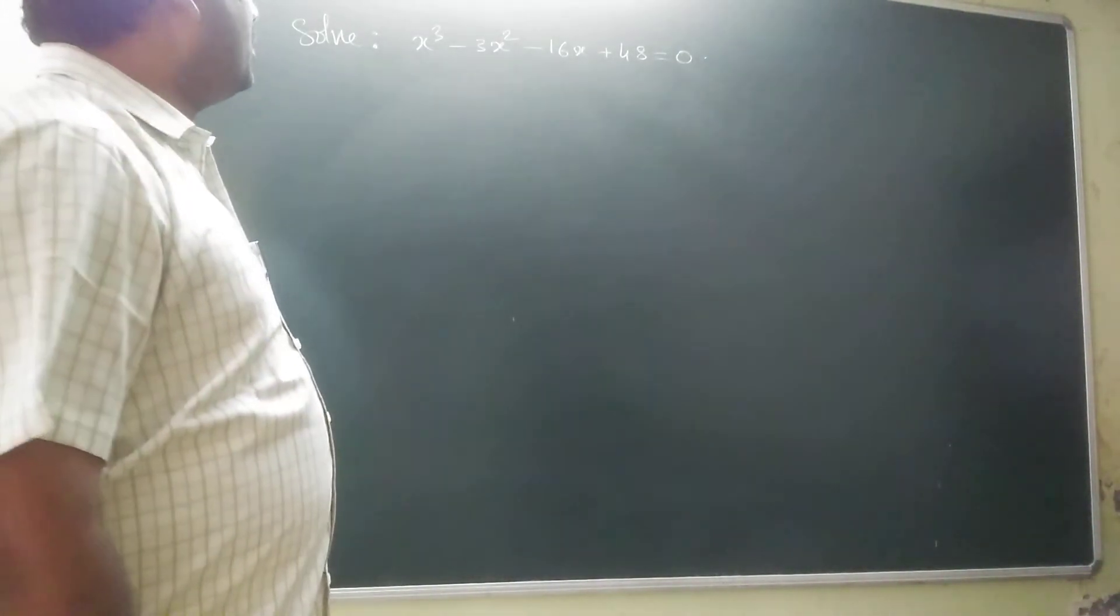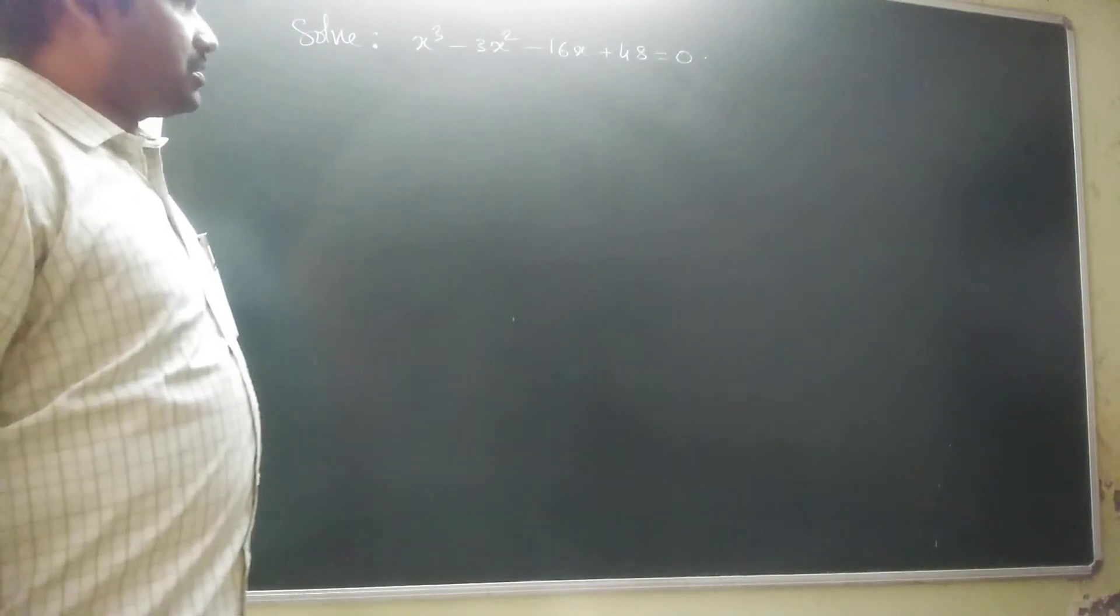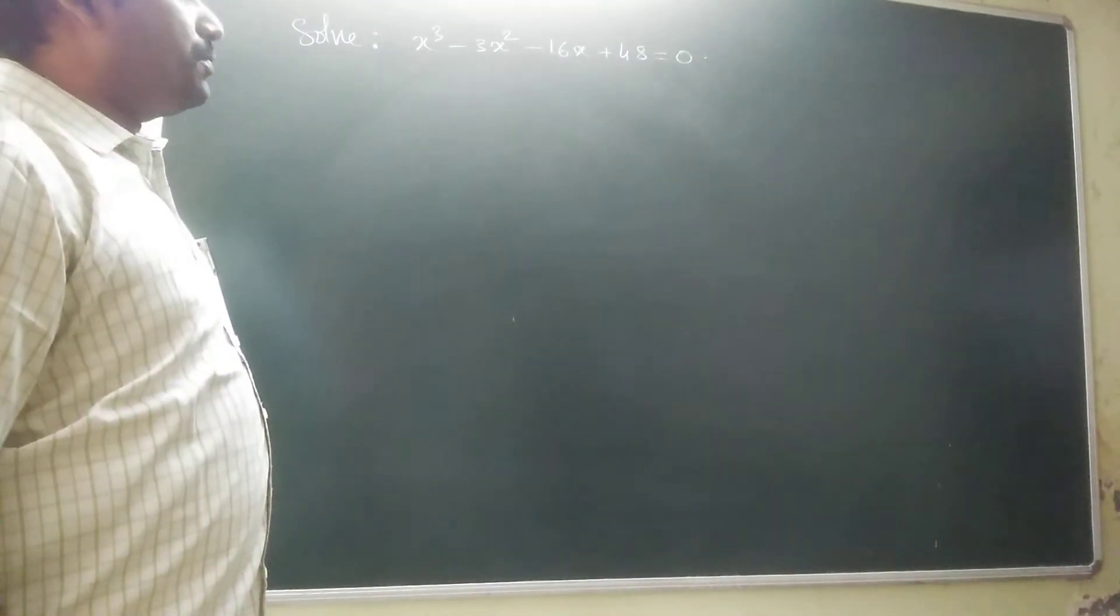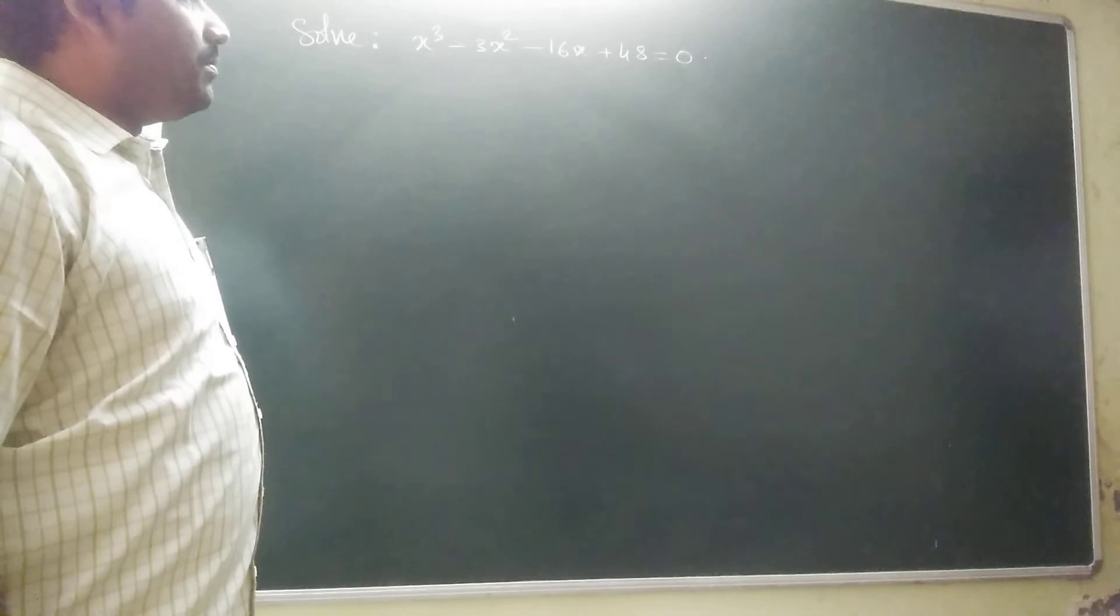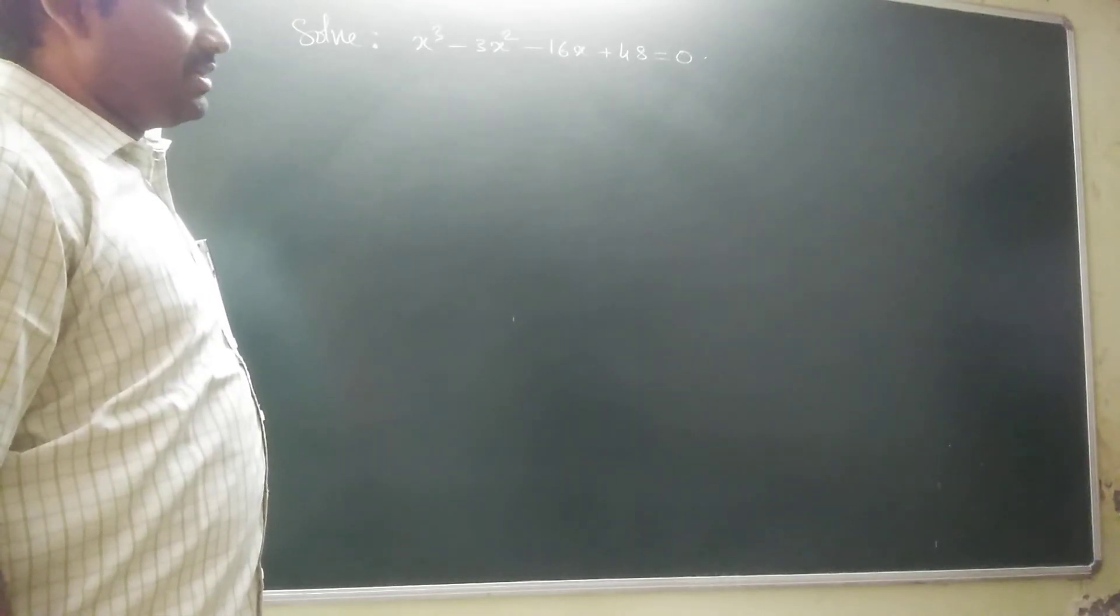Hi students! See this problem. Solve this equation: x cube minus 3x square minus 16x plus 48 equal to 0.